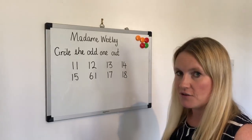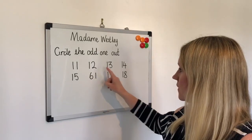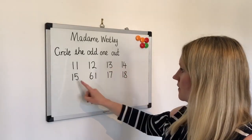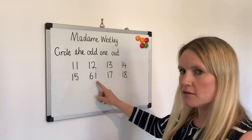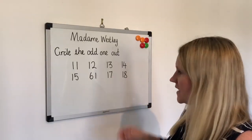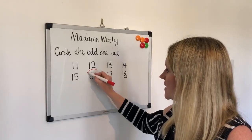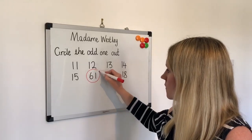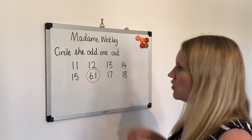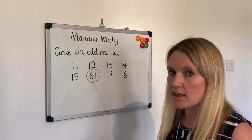Let's go through the numbers: 11, 12, 13, 14, 15, 61, 17, 18. That's right, the odd one out is 61. Now underneath, could you write why you think that is the odd one out?